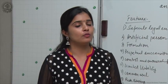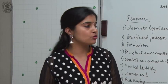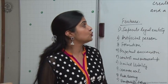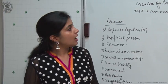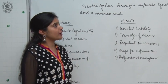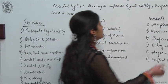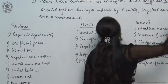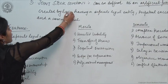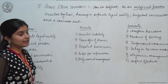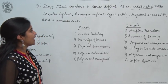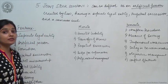The fifth and last form of business organization we are going to discuss is joint stock company. It can be defined as an artificial person created by law, having a separate legal entity, perpetual succession, and a common seal.